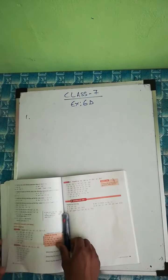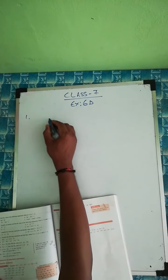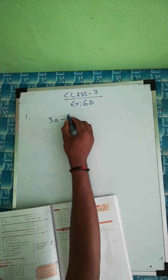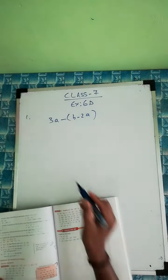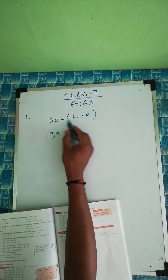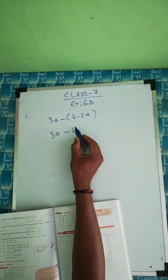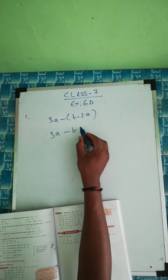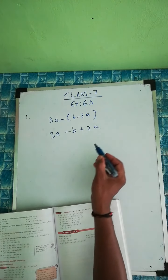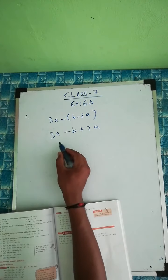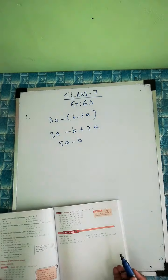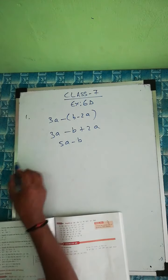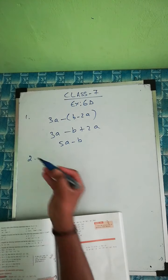Question 1: 3a minus b minus 2a. Multiply inside: minus times minus is plus, so 3a plus 2a is 5a, giving us 5a minus b. That's question 1 done.